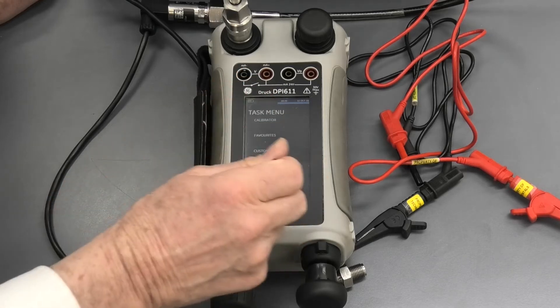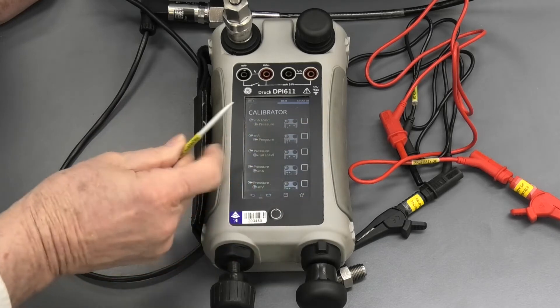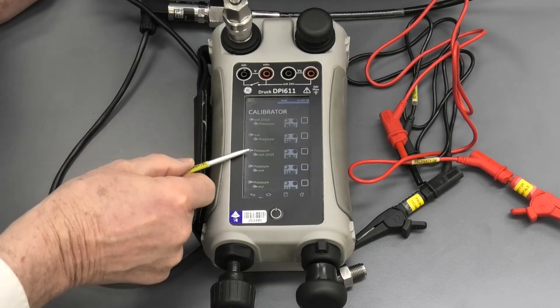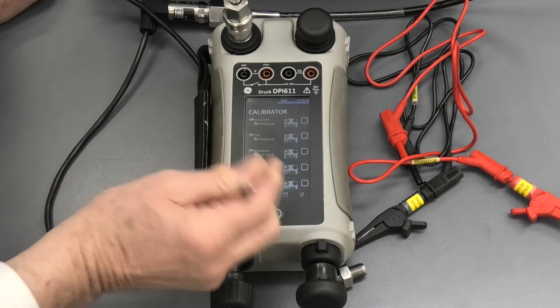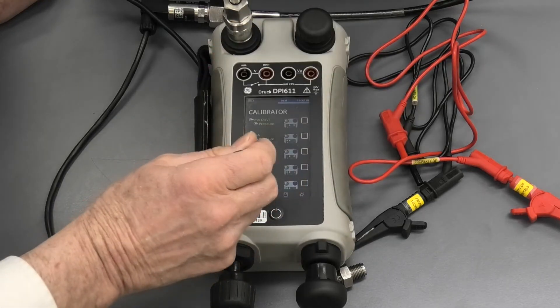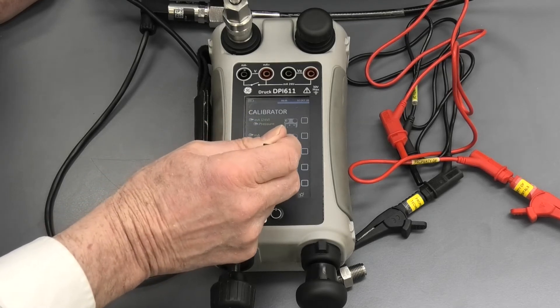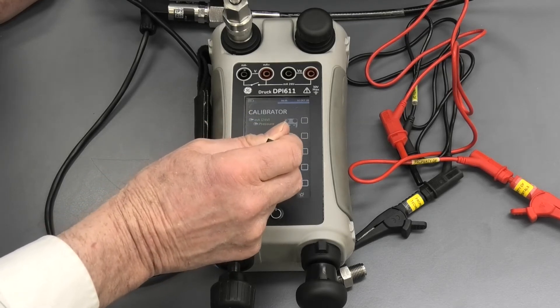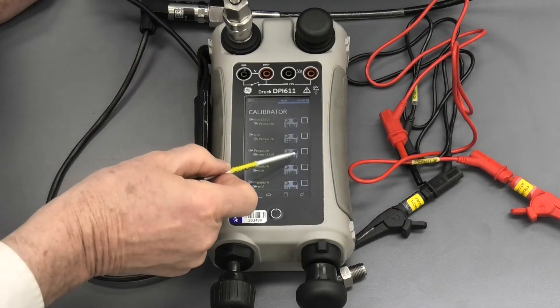Now, when I select the calibrator, it comes up. Now, in this instance, we want pressure out with 4 to 20 milliamp in, 24 volt supplied, because we don't have a power supply here. Now that also indicates how we're going to do the 4 to 20 milliamp wiring there. So it tells us we're going to be using this pressure point, which is correct.